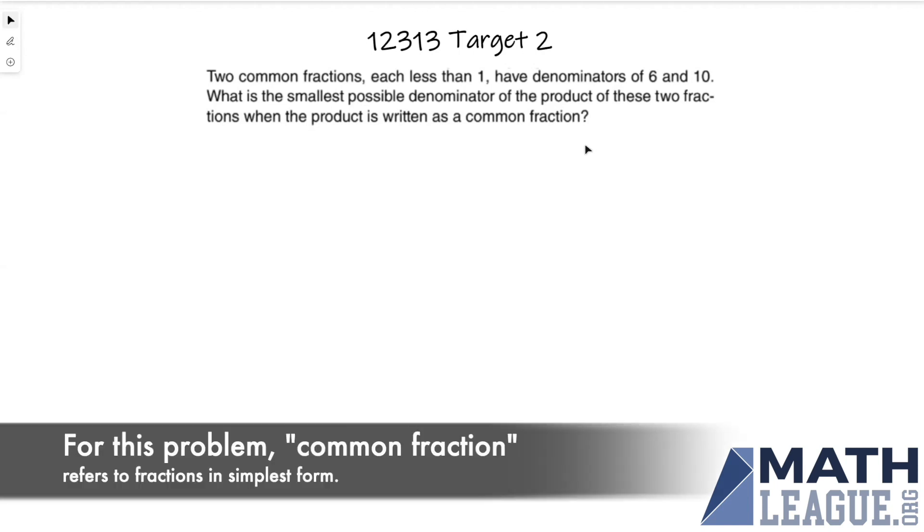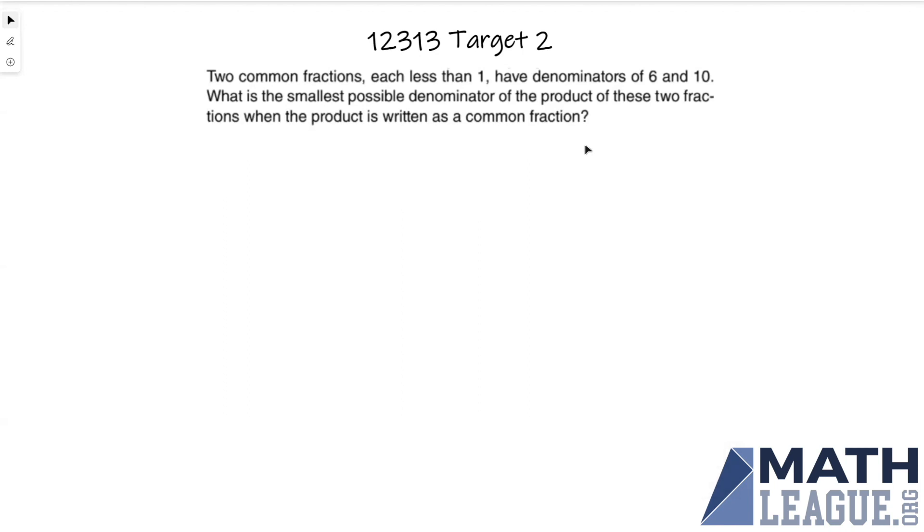So for this problem we're going to let the fractions be written as a over six and b over ten. So then when we multiply the two fractions their product will be a times b over six times ten which is sixty.